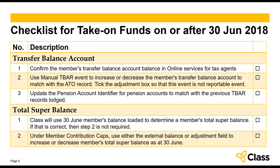Checklist for take-on funds on or after 30 June 2018. If you inherit a new fund from another practice with 30 June 2018 as the book close day, chances are they have already lodged their TBAR information — you need to find that. First, confirm members' transfer balance accounts. Ideally, if you're appointed as the tax agent for that member, you can get that information through the tax agent portal; alternatively, members can log into myGov to confirm. You can then use the manual TBAR events in CLAS to update the members' transfer balance accounts so they match with ATO records. If any pension account was previously lodged through other software or via paper, you need to find the pension account identifier and make that change in CLAS.